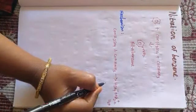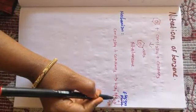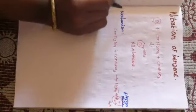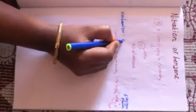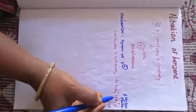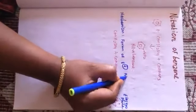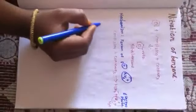So NO₂⁺ is the electrophile which is going to attack our benzene ring. The first step is formation of the electrophile. In nitration of benzene, the electrophile is NO₂⁺.